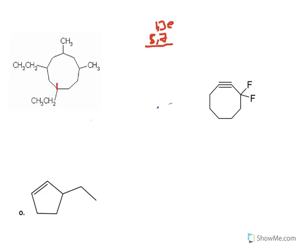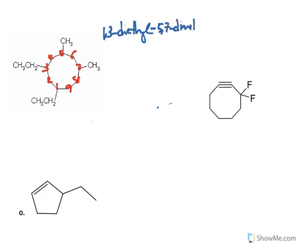I will go with the second numbering: one, two, three, four, five, six, seven, eight, and nine. If you try other possible numbering options, you will find this is always the best choice. So the name is: one and three diethyl, five and seven dimethyl — and this is a cycle of nine carbons — so 1,3-diethyl-5,7-dimethylcyclononane. I use 'cyclo' because it is a cyclic compound.